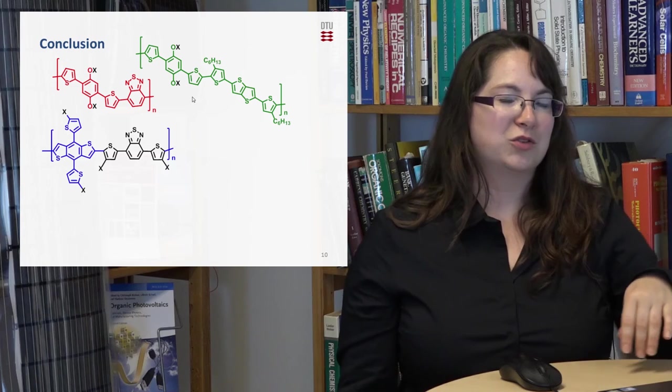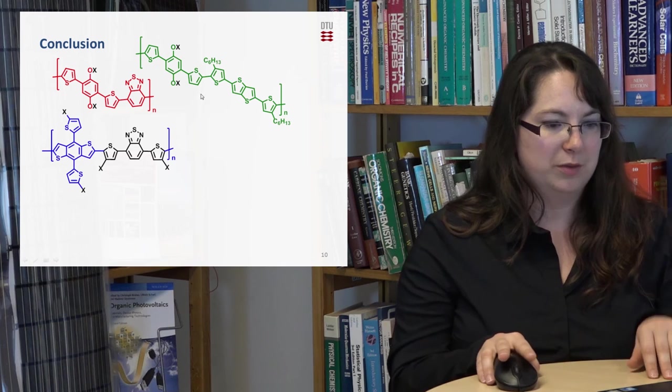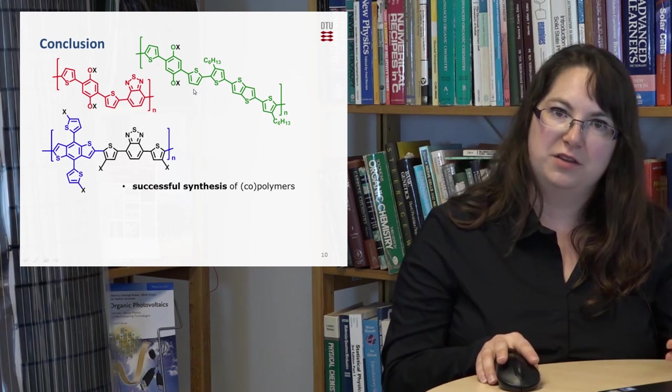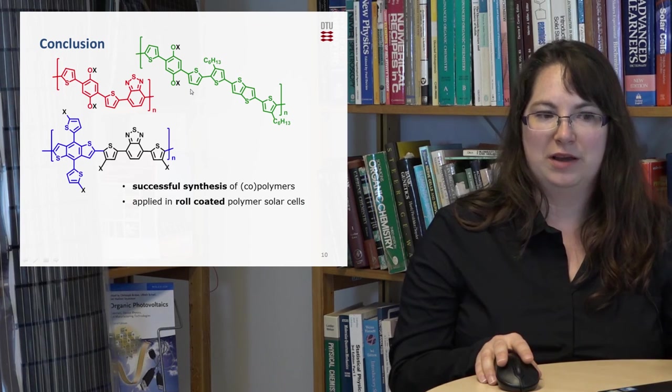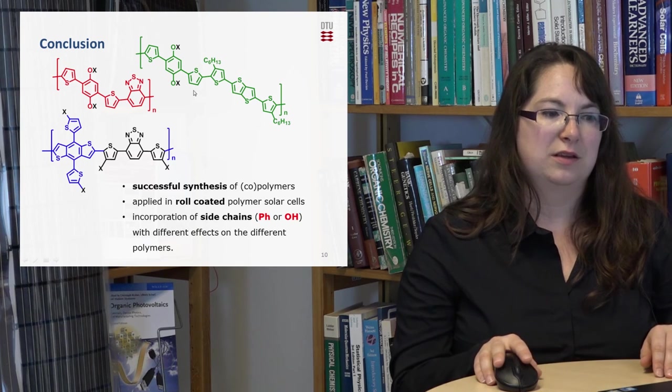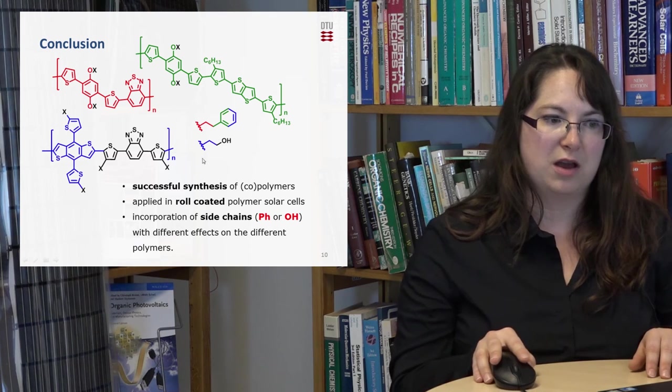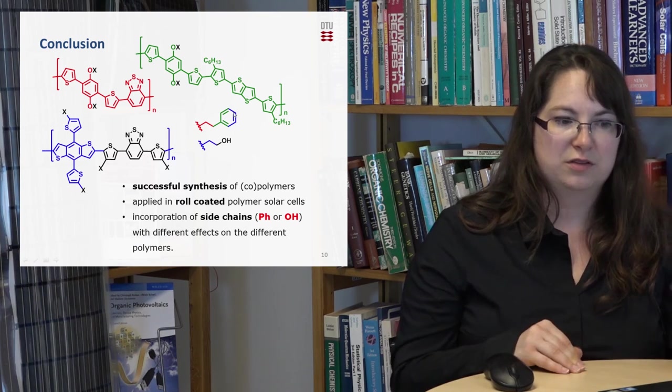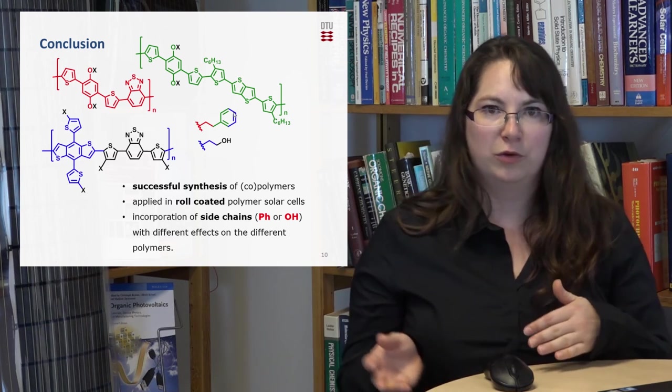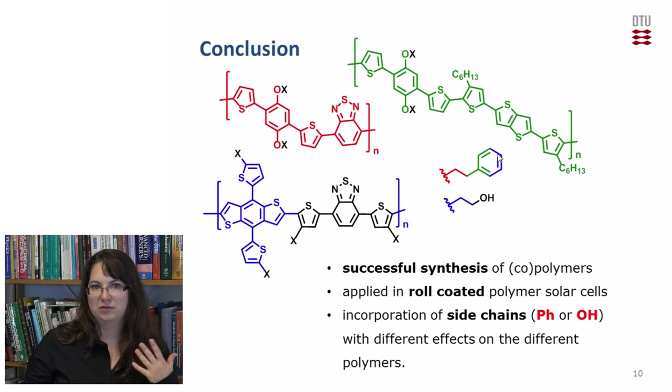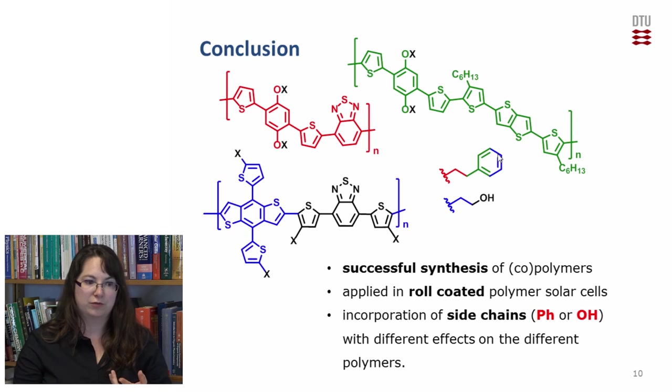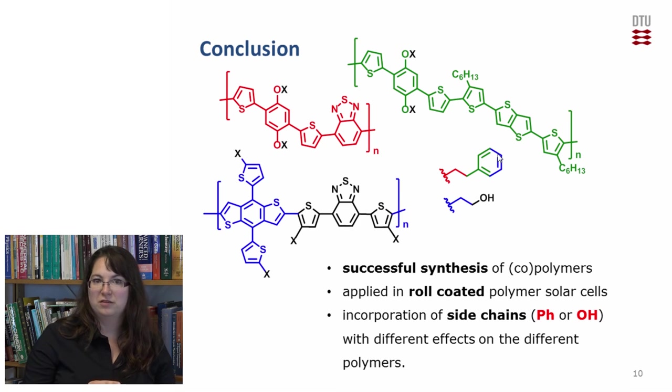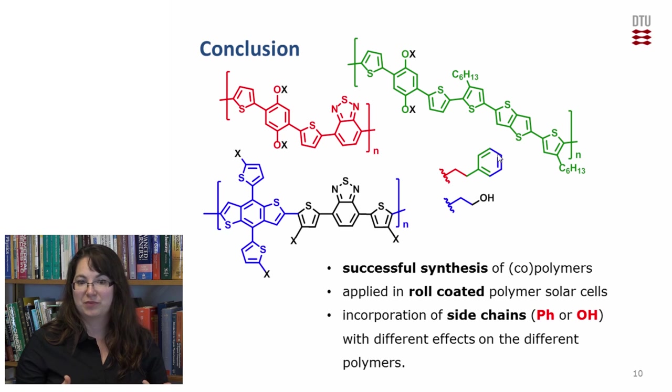So to conclude my talk I could synthesize these copolymers with the different variation of side chains or stability side chains. I could apply them all in roll-coated polymer solar cells and the incorporation of the side chains the phenyl and the alcohol side chain they give different results. Some of them were improved but some of them were also a little bit worse than the original polymer. So for a future outlook we can say that there still needs to be quite a lot of study which side chains need to be used, maybe also change the amount of side chains but also it depends probably on the polymer backbone which is the right side chain and maybe by incorporating a side chain there's no improvement possible.